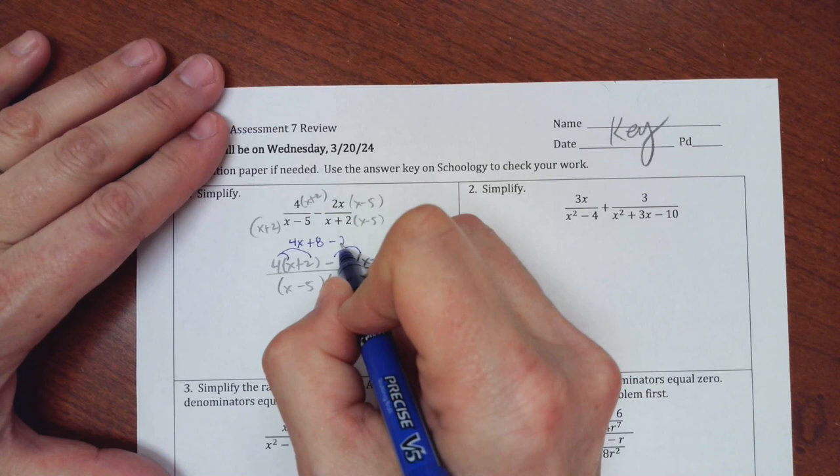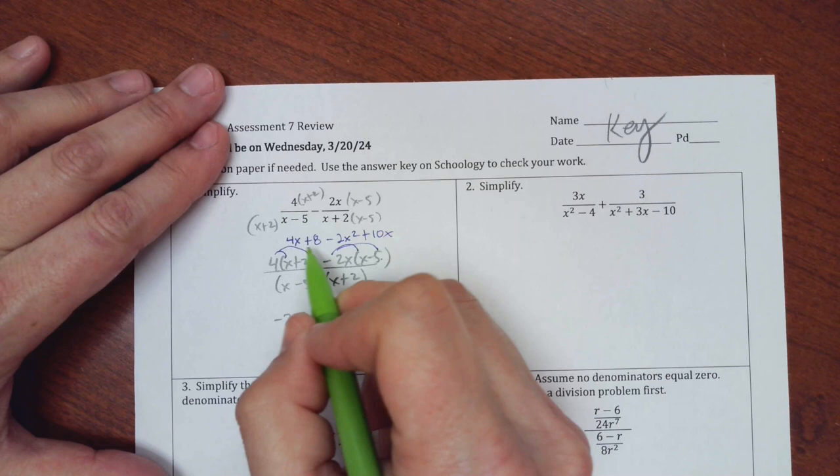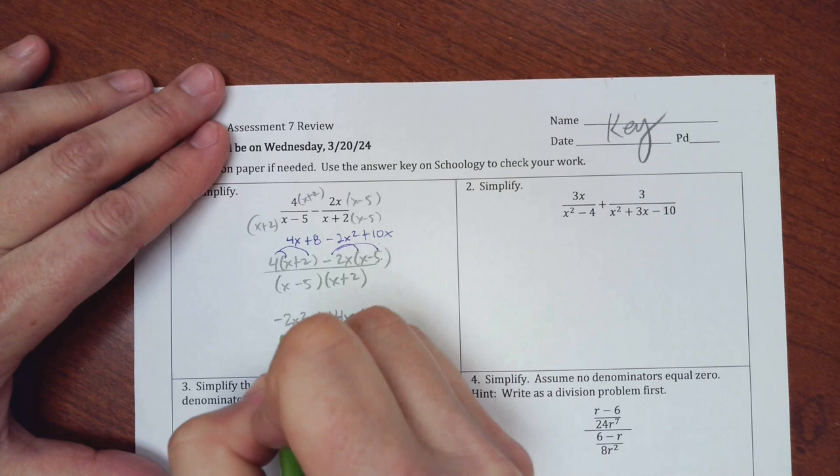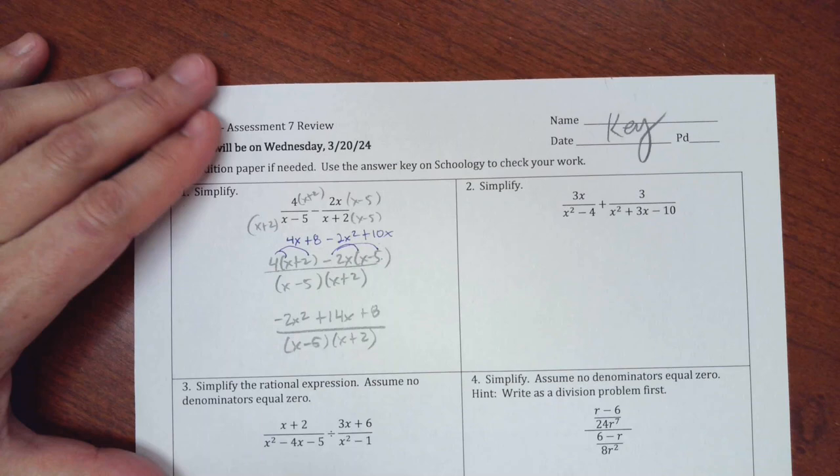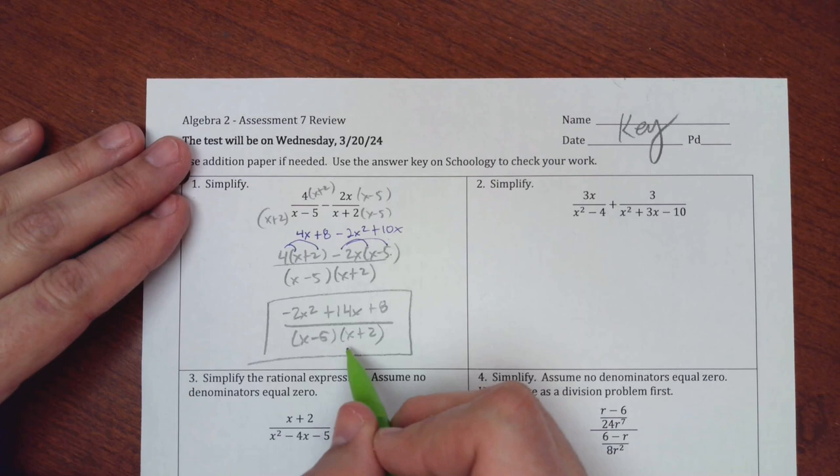and then here, don't forget negative, so negative 2x squared, and then plus 10x, don't forget that x right there. So negative 2x squared is first. 4x and 10x make positive 14x, then 8. Don't forget to put your denominator back, because that was the point. There's a common denominator to make one fraction. So then you're done. You don't have to multiply this out. You don't need to factor that unless you notice on a multiple choice that one of these things is missing, and then it canceled.